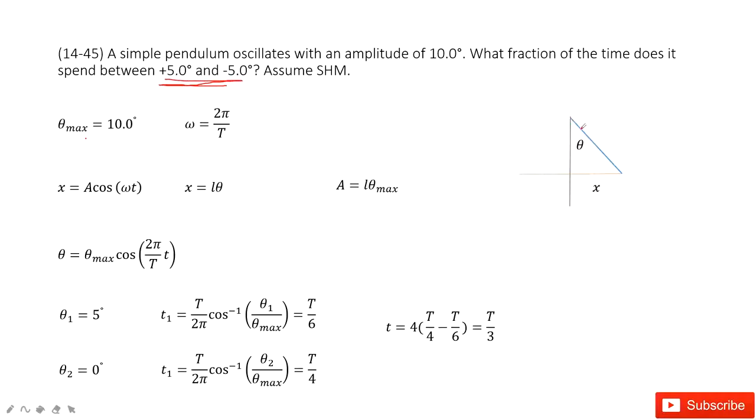So for pendulum oscillations, if we look at the horizontal x, its motion can be described in this function. Do you agree? Yes, it's a simple harmonic motion, and omega is 2π over T.